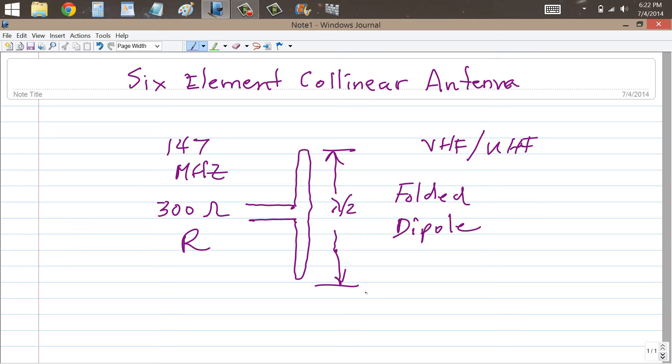I guess you can already guess pretty much how that might work and you've probably seen some of these antennas installed in repeaters because they're excellent for that application. A vertical folded dipole for 147 megahertz is approximately one meter tall.